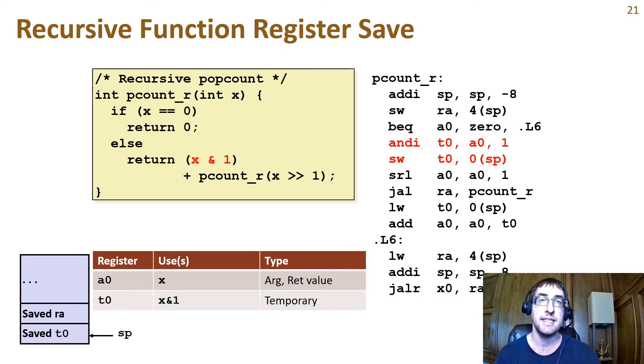We start by calculating x and 1, putting the result in a caller saved temporary register t0. Then we store the result to the stack so that we can get it back after the recursive call returns to this stack frame.